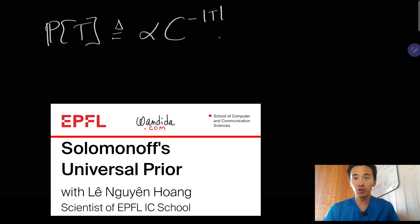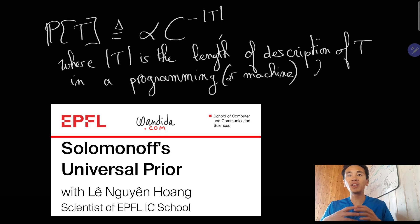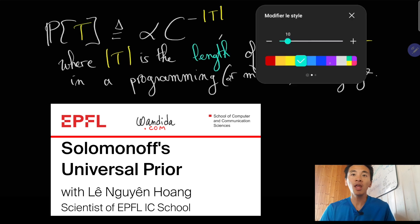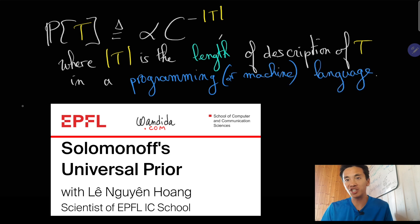In previous videos, we saw that Solomonoff introduced a natural prior of a computable probability distribution by invoking the length of the description of this computable probability distribution in the language of a universal Turing machine, or in fact in any Turing complete programming language.